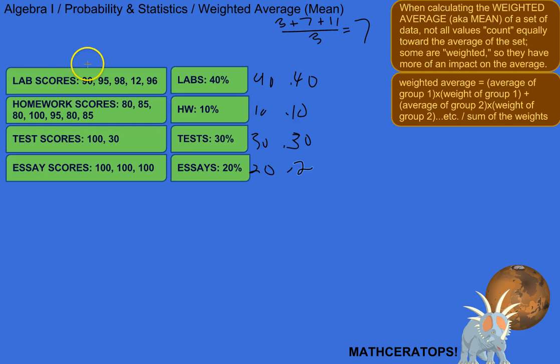So here's the process. So we first find the unweighted average of each group. So, for example, for the lab scores, we'd add 90, plus 95, plus 98, plus 12, plus 96, and divide it by 1, 2, 3, 4, 5.